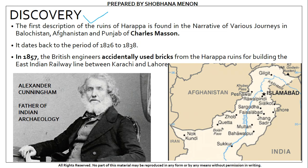The story starts with a man called Charles Mason, who was an explorer and traveler who journeyed the regions of Balochistan, Afghanistan and Punjab, and wrote travel accounts mentioning the ruins of Harappa for the very first time in his travelogues, which could be dated between the years 1826 to 1838. So the first ever mention of Harappa was in the travelogues of explorer Charles Mason in the early half of the 19th century.